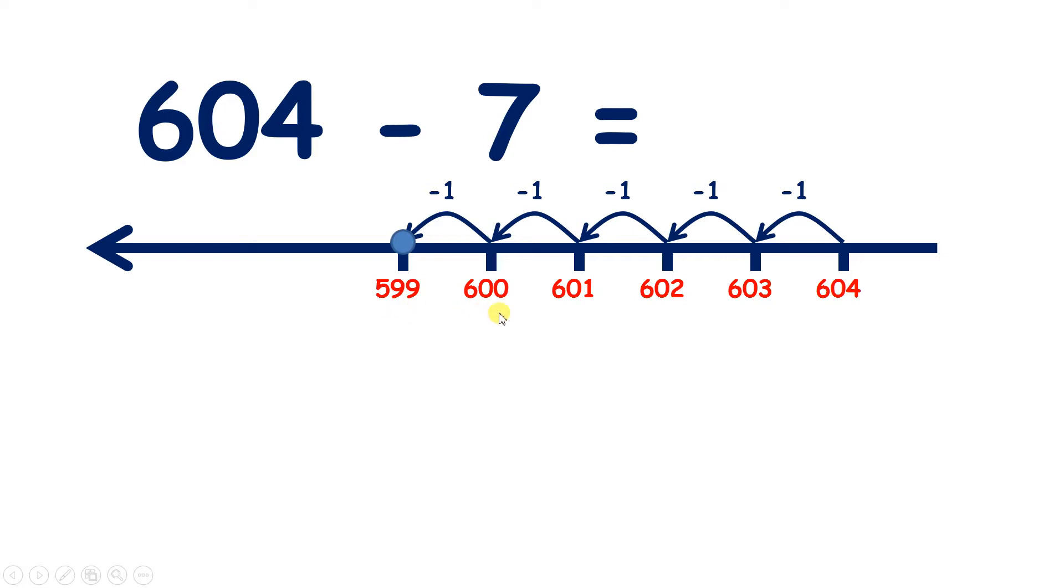So when we subtract 1 from a multiple of 100, you have the previous multiple with 99 units: 598, 597. So we've subtracted 7 from 604 to get 597.